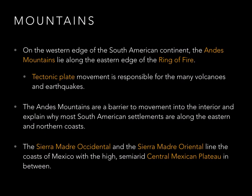On the western edge of the South American continent, pretty much from north to south, are the Andes Mountains. This is also the eastern edge of the Ring of Fire — an area with a lot of tectonic plate movement, so you find volcanoes and earthquakes. The Andes have always been a barrier to movement into the interior of the continent, which is why most South Americans live along the eastern and northern coasts. Up in Mexico, you find the Sierra Madre Occidental and the Sierra Madre Oriental Mountains, and wedged between them is the semi-arid, very high Central Mexican Plateau — a high area like a mountain but with a flat top.